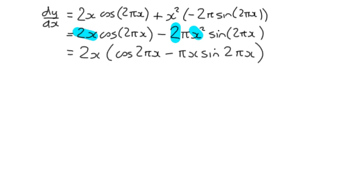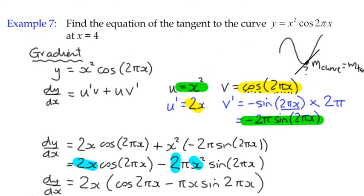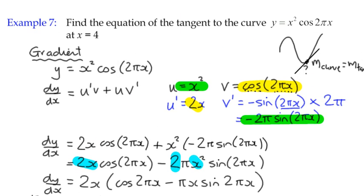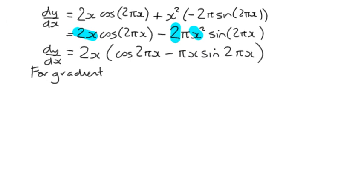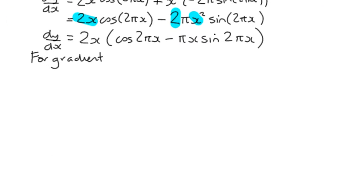And what we normally do then in order to find the gradient, we need to know the x coordinate. Because this rule here tells us the gradient for any given value of x. What do we know about this function? We know that the value of x is 4. So we want the gradient when x equals 4.